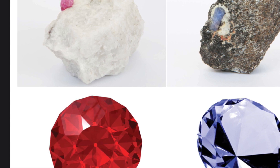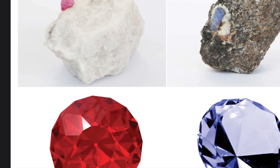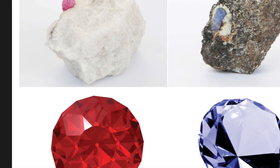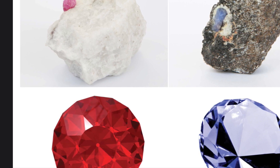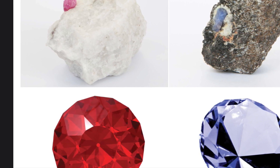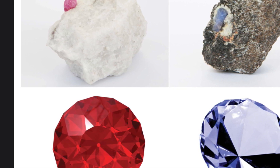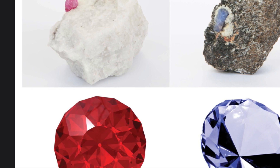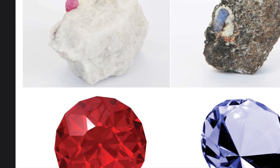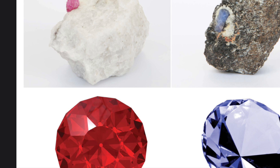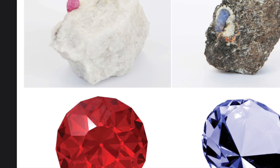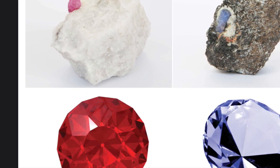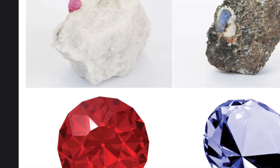Examples of rare gemstones are some varieties of corundum, a mineral composed mostly of aluminum and oxygen. The red corundum is known as ruby, and blue corundum is known as sapphire. Rubies and sapphires are among the most beautiful mineral crystals on Earth.